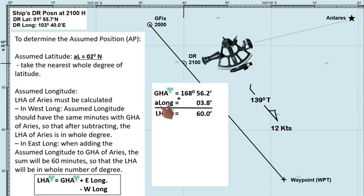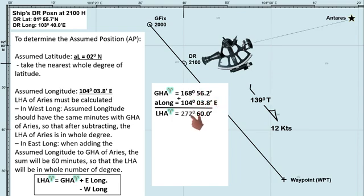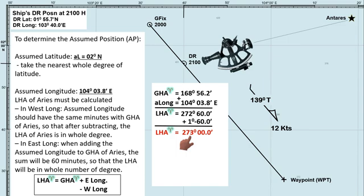Always remember that our assumed longitude should be nearest to our DR longitude. So we have two choices: 103 degrees, 3.8 minutes east, and 104 degrees, 3.8 minutes east. It is clear that the nearest is 104 degrees, 3.8 minutes east. Now the sum of 168 and 104 degrees is 272 degrees. We know that 60 minutes is equal to 1 degree, we will subtract 60 minutes and add 1 degree to 272 degrees, so our LHA of Aries is 273 degrees, which is a whole number of degrees.